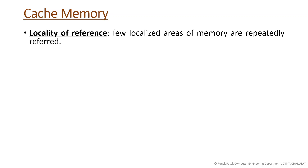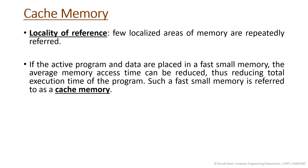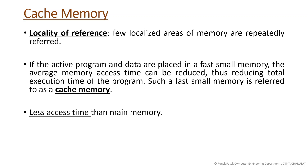Your CPU can work more efficiently because it is getting data as per its speed. If the active program and data are placed in fast small memory — that is your cache memory — the average memory access time can be reduced, thus reducing the total execution time of the program. This fast small memory is referred to as cache memory, and it has less access time than main memory.